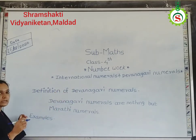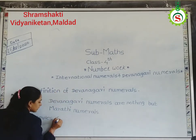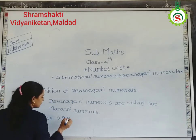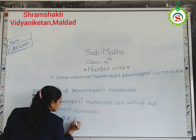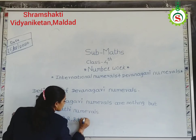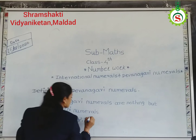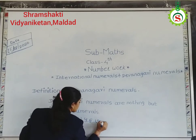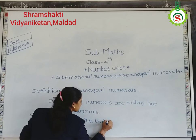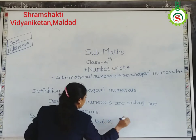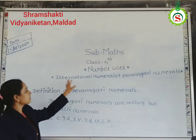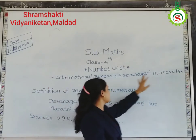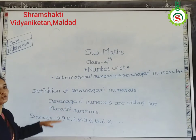You know Marathi numerals. Devanagari numerals are nothing but Marathi numerals. For example, the Devanagari numerals are 0, 1, 2, 3, 4, 5, 7, 8, 9, etc. Means international numerals are English numerals and Devanagari numerals are Marathi numerals.